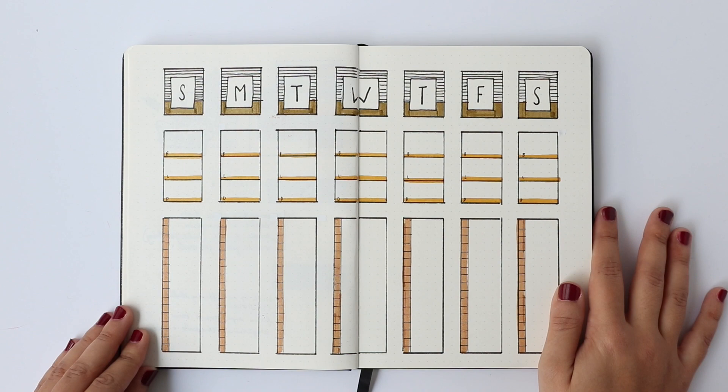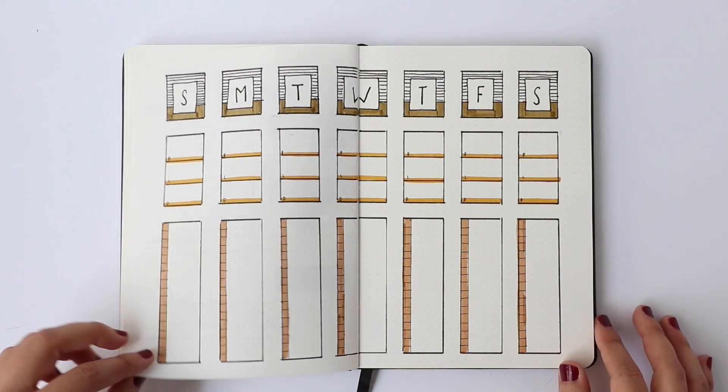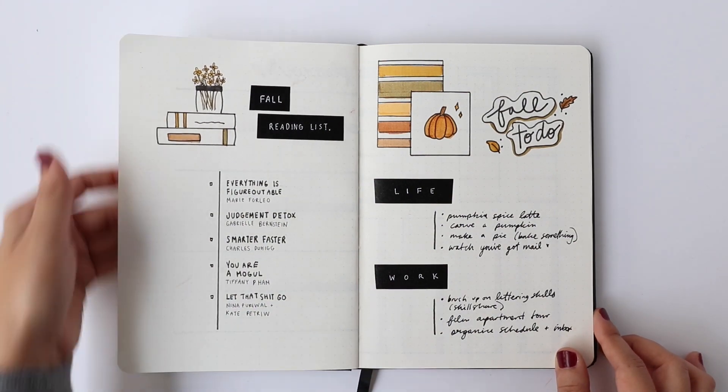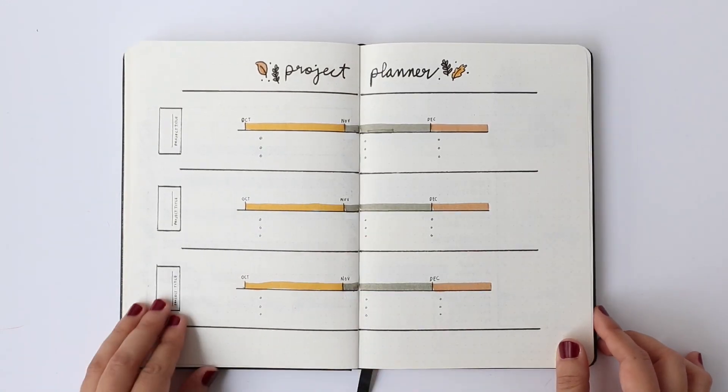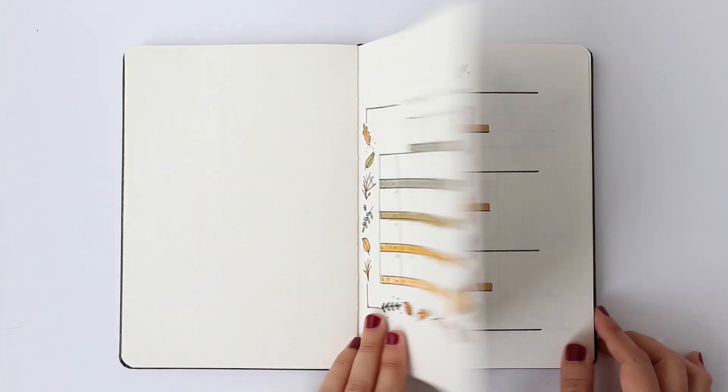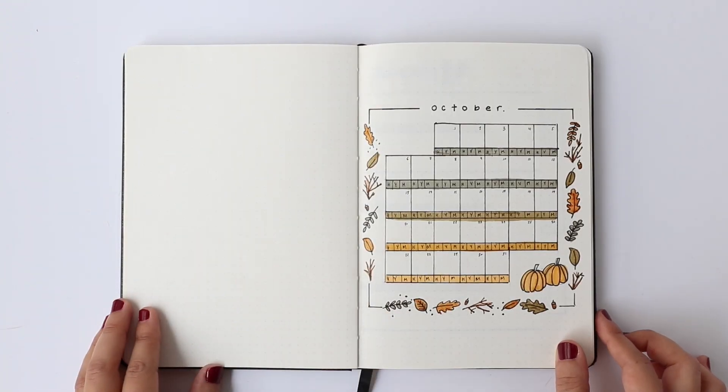And that's a wrap for October's plan with me. I hope you guys enjoyed it, and if you did be sure to give it a big thumbs up. Hit the subscribe button and the notification bell if you haven't already, and I would love to know in the comments below what is your number one fall activity? Something that I do every fall that I didn't really touch on when I was creating my fall to-do list but it is on there is I watch You've Got Mail.